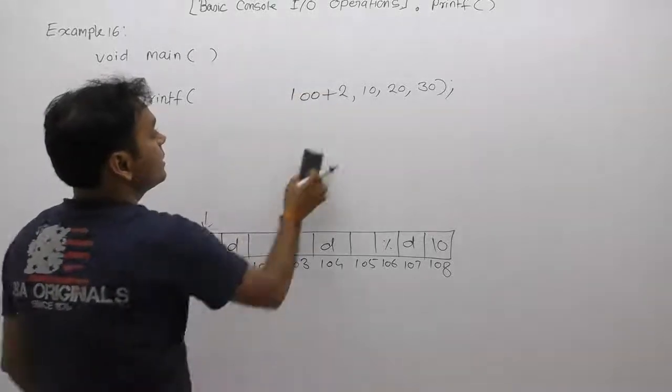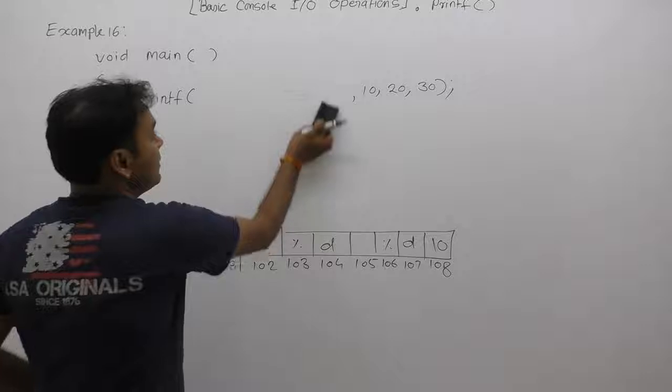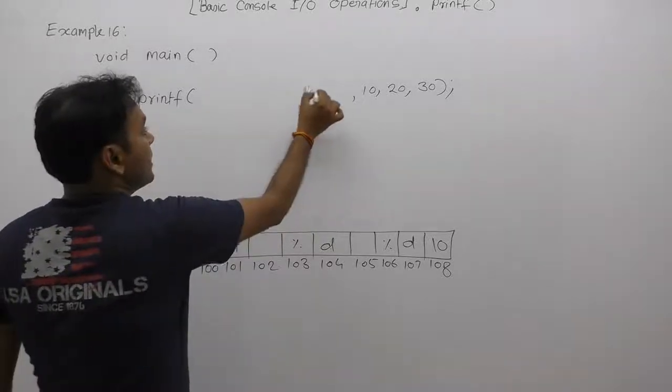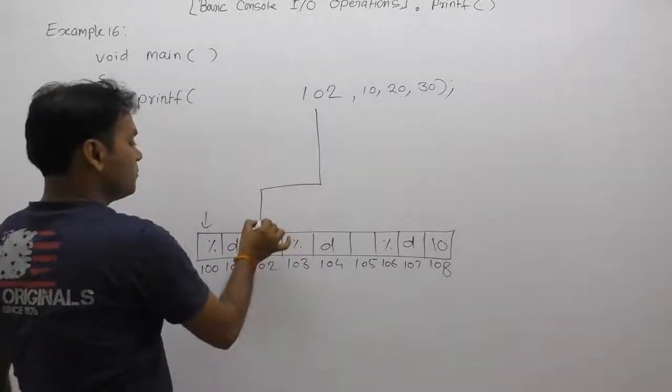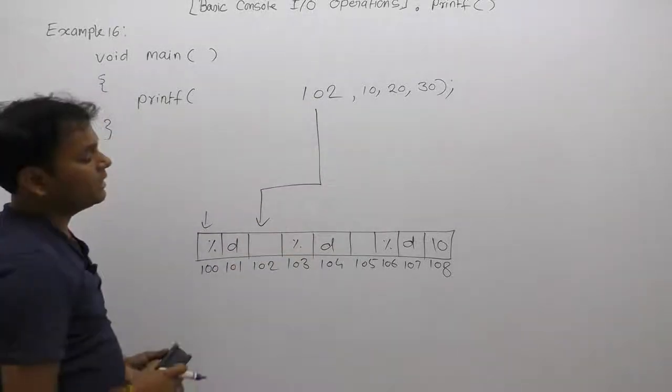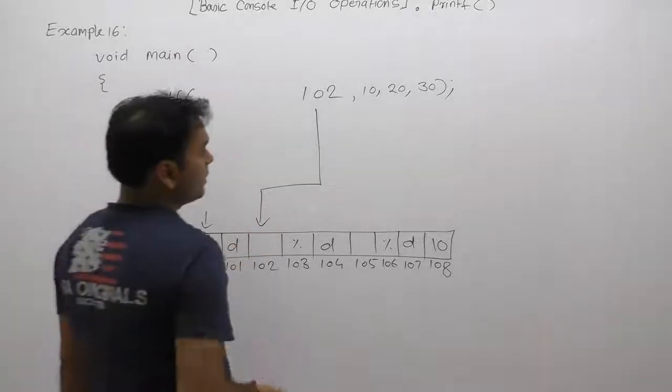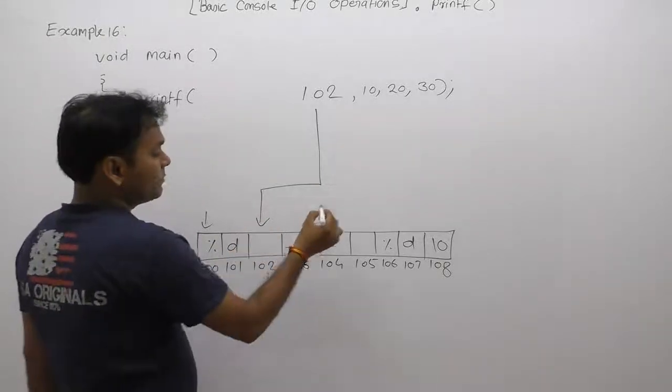Therefore, the final address supplied is 102. In that case, the format string will be considered from location 102 onwards. The behavior of this printf becomes like that.